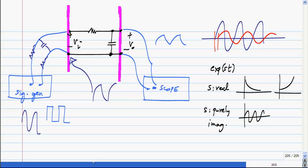So sinusoid with a constant amplitude. If s is complex and the real part is negative, you get that. If the real part is positive, you get that. So now, I think your question is, why should we not use s real? What is the problem with doing that?